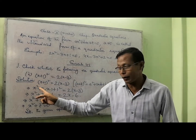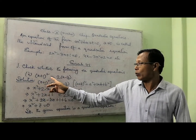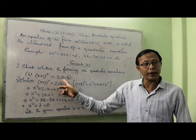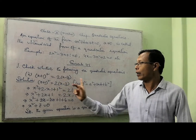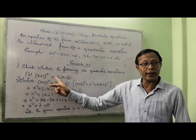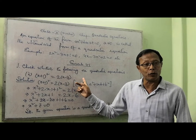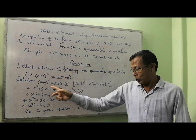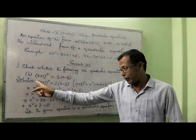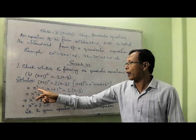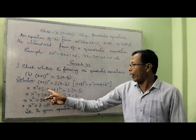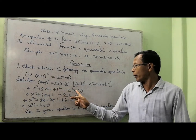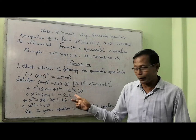Now I am solving the answer. (x plus 1) squared equal to 2 times (x minus 3). Here we can apply the formula: (a plus b) squared equal to a squared plus 2ab plus b squared. So proceeding: x squared plus 2 times x times 1 plus 1 squared equal to 2(x minus 3).